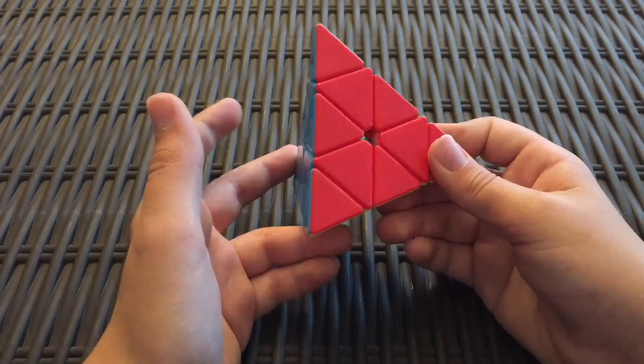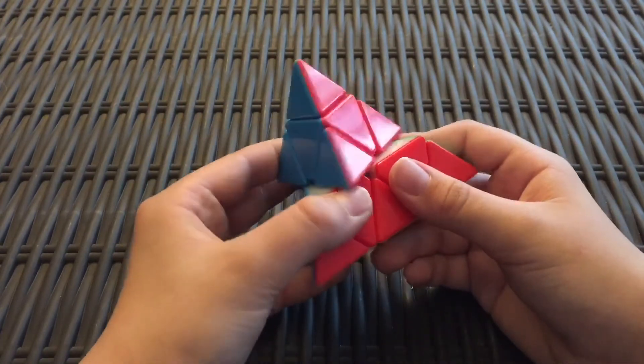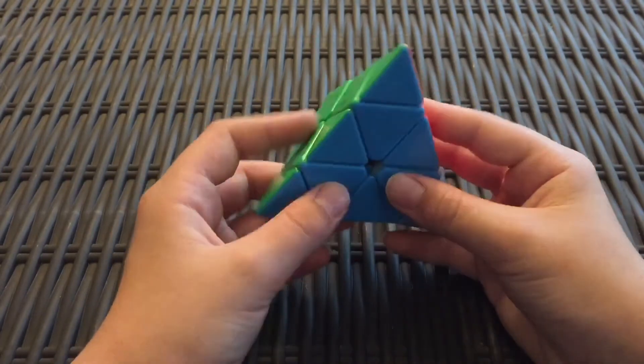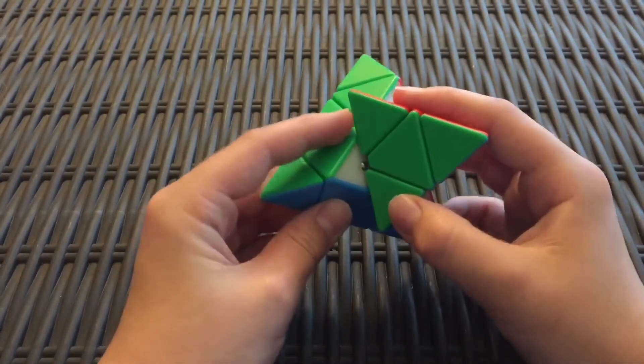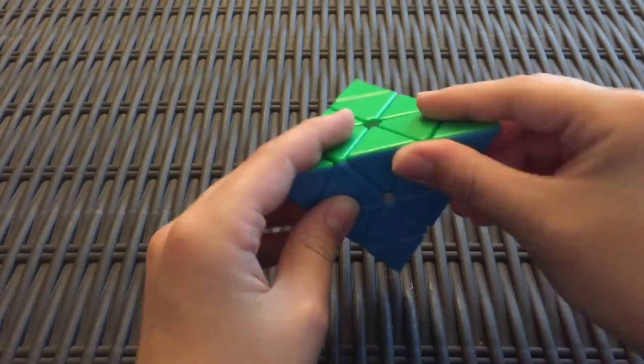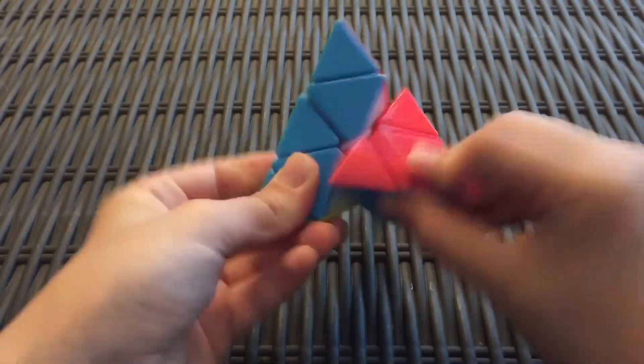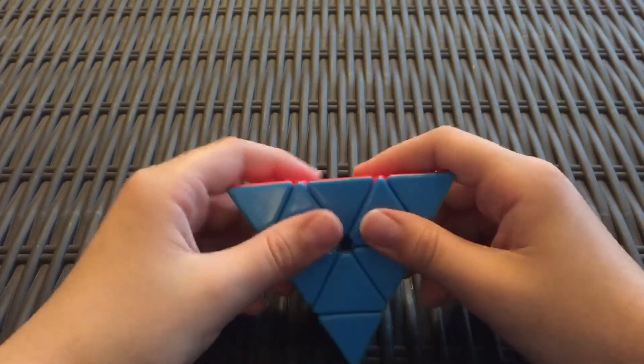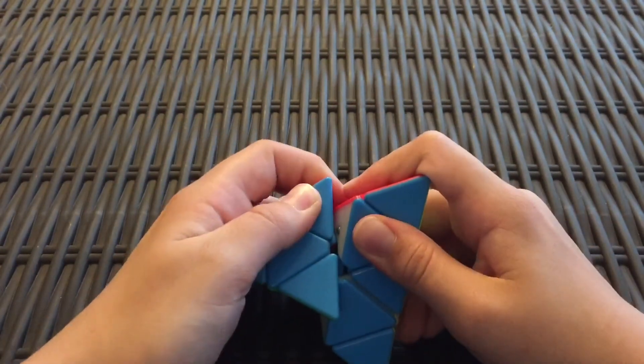That's basically all for Pyraminx notation. There aren't any other moves since this is a normal Pyraminx. The Pyraminx I used in this video was, I believe, the Z Magnetic Pyraminx. It turns pretty well and I would definitely recommend it. Although if you're trying to lube it or something, it's pretty hard to get the pieces out.